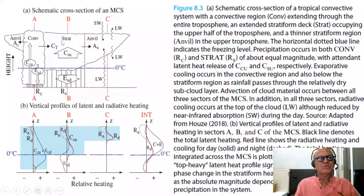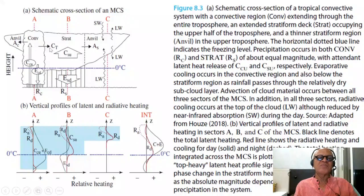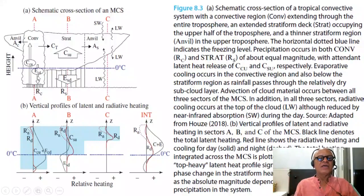The rainfall amounts in the convective and stratiform regions are almost the same, which means the condensational heating in the cumulus versus the stratiform deck are almost the same. There is also the anvil cloud on the other side, receiving cloud material from the convective region, since there is no direct lift of moisture from the boundary layer. Below the freezing level, rain evaporates in the dry air, so evaporative cooling must also be considered alongside condensational heating.